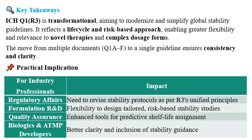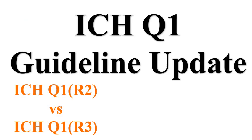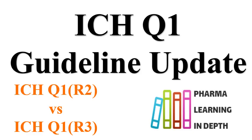The practical implications of this updated guideline for industry professionals impact different departments. Regulatory affairs needs to revise stability protocols as per Q1R3's unified principles. Formulation R&D gains flexibility to design tailored, risk-based stability studies. Quality assurance benefits from enhanced tools for predictive shelf life assignments. Biologicals and ATMPs developers gain better clarity and inclusion of stability guidance. Earlier the guideline was Q1R2 with separate sections Q1A to Q1F; now as a single Q1R3 draft guideline, pharma professionals should stay well informed of these updates.